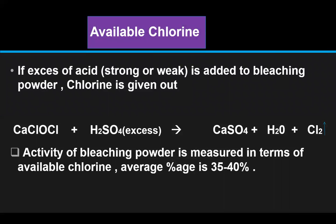If excess acid, whether strong or weak, is added to bleaching powder, chlorine gas is given out. The formula of bleaching powder is CaCl(OCl). When an excess amount of sulfuric acid is added to bleaching powder, Cl2 gas is released. The activity of bleaching powder is measured in terms of available chlorine, and the average percentage of available chlorine is 35–40%. When we add excess acid to bleaching powder to check its quality, the chlorine gas set free is called available chlorine.